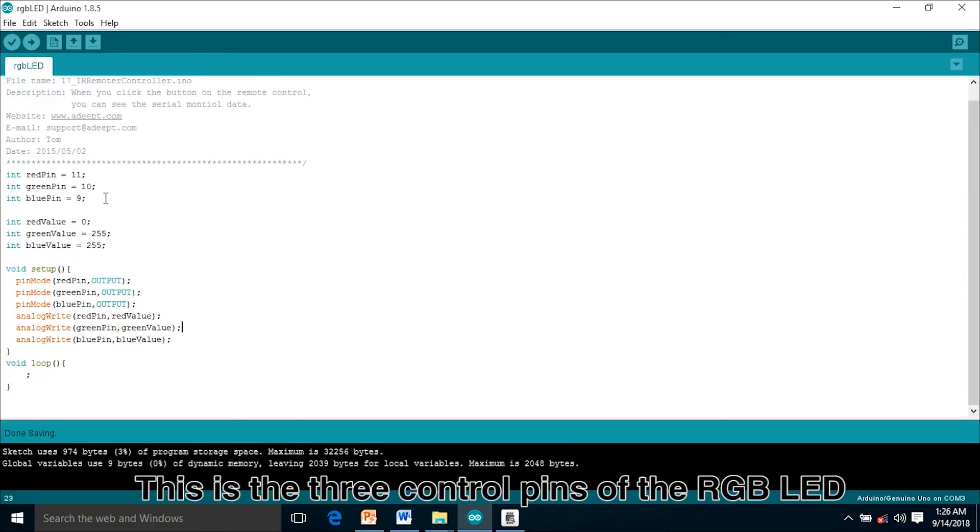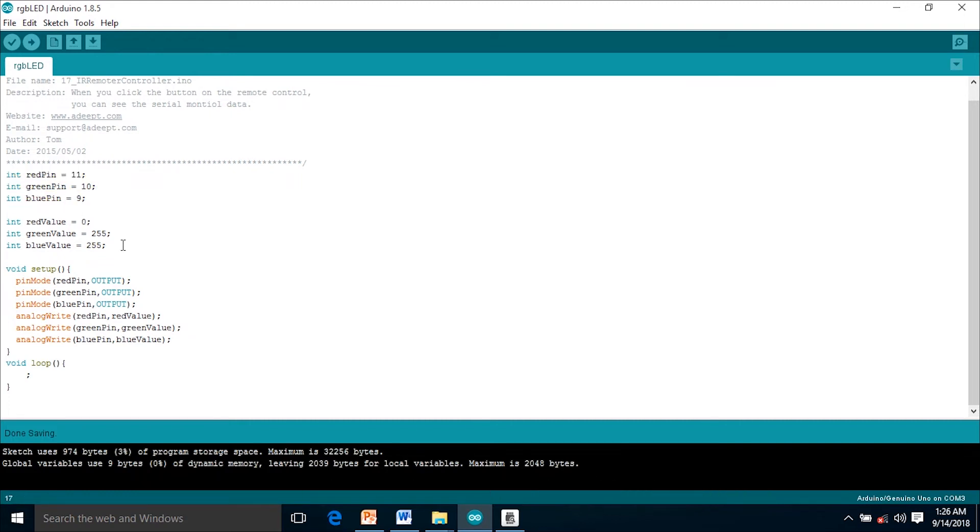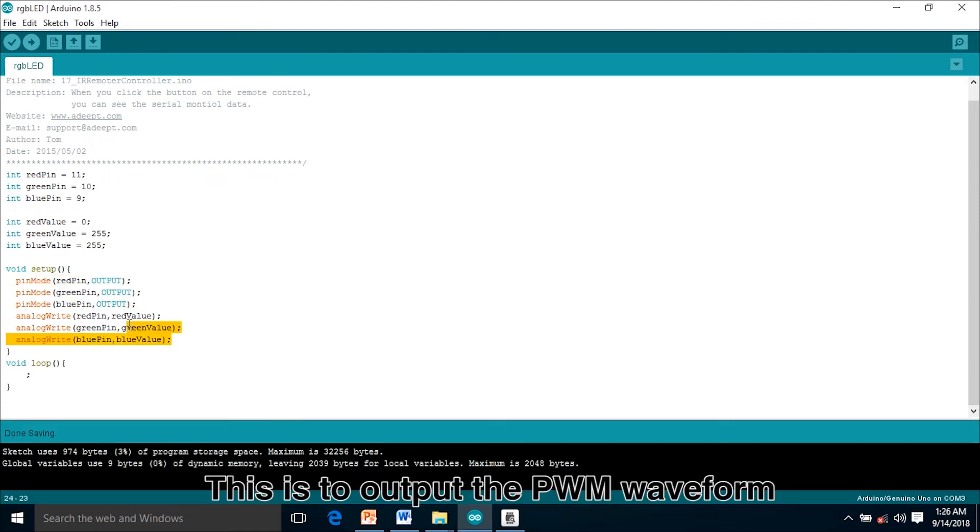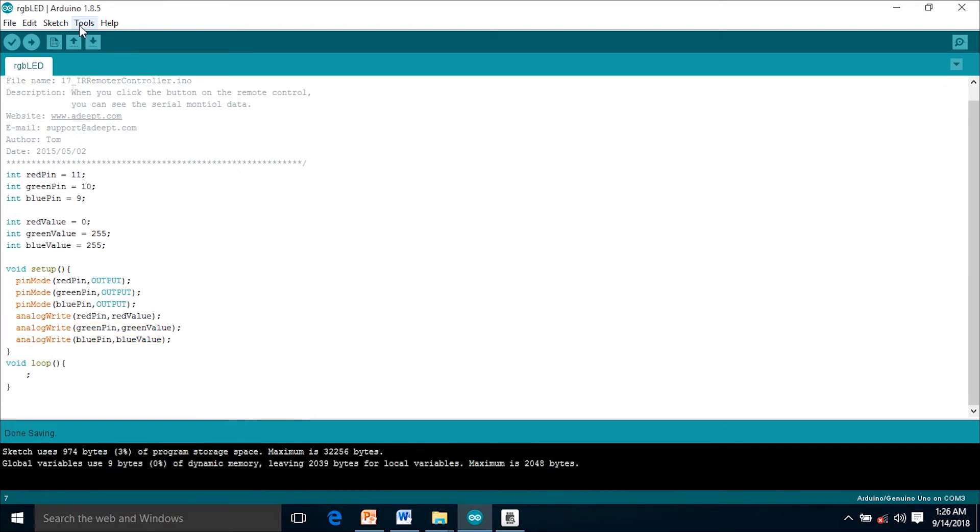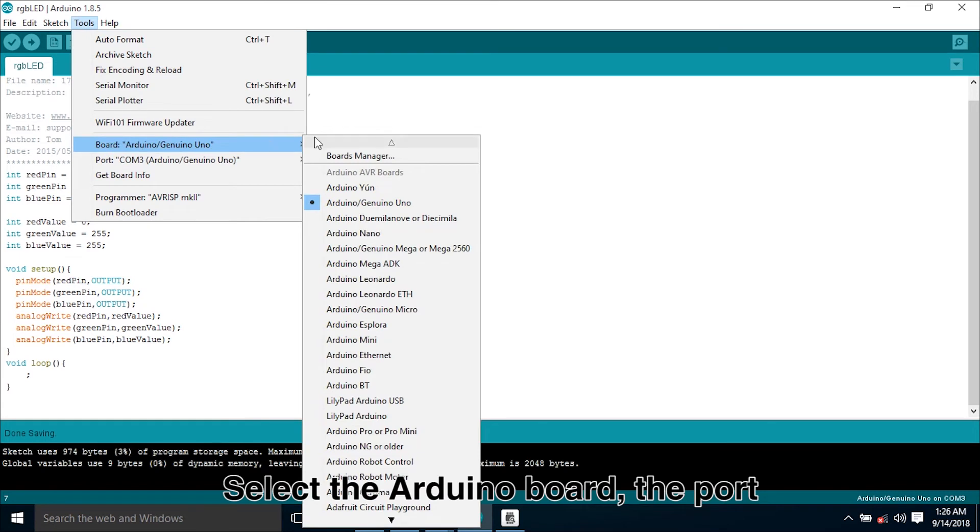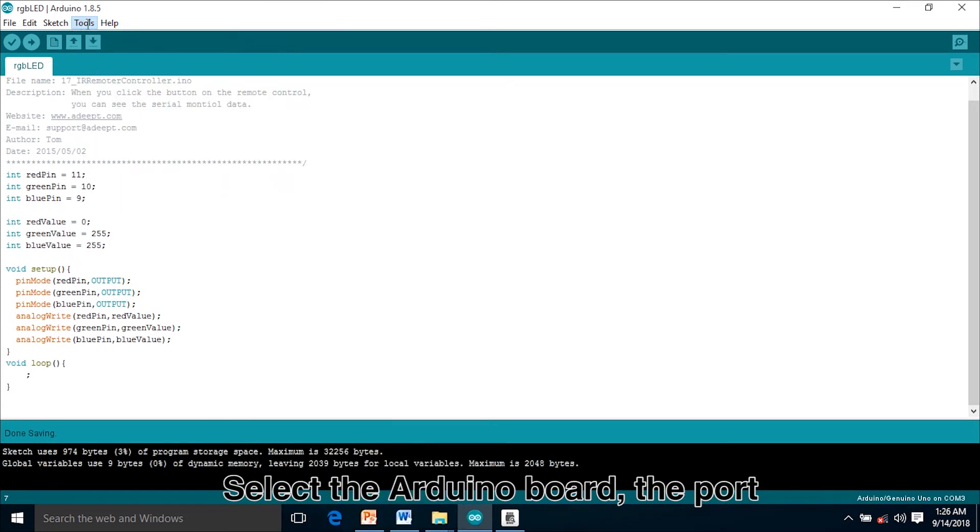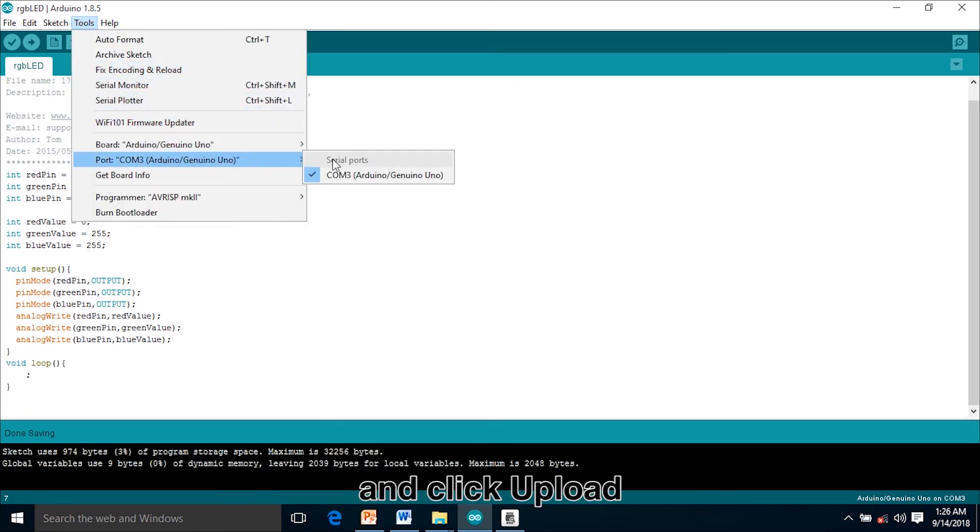This is three control pins of RGB LED. Now set the color to red, and three pins to the output. This is to output the PWM waveform. Select the Arduino board, the port, and click upload.